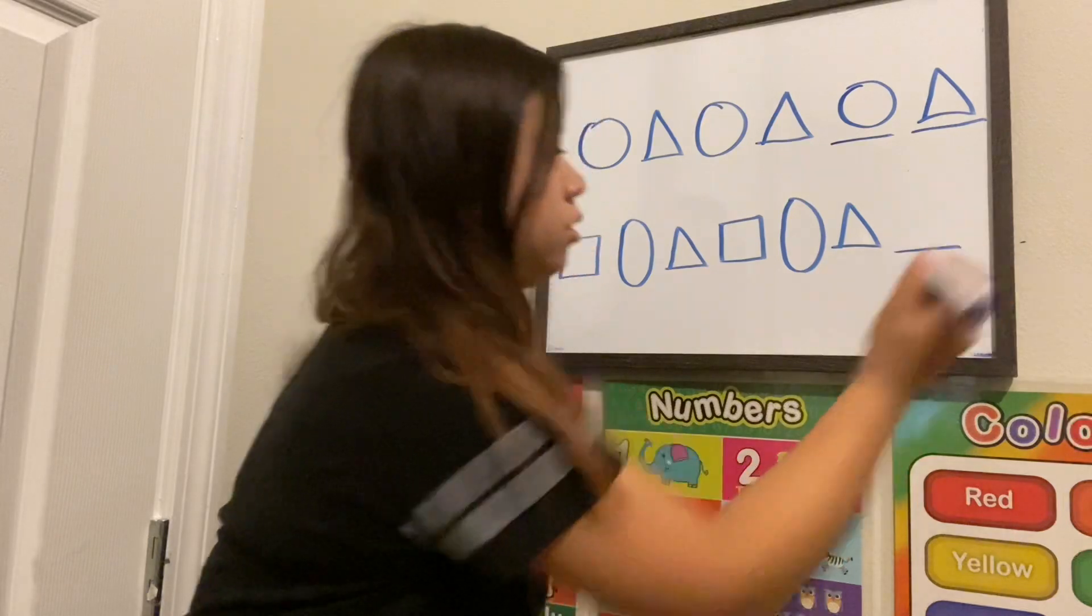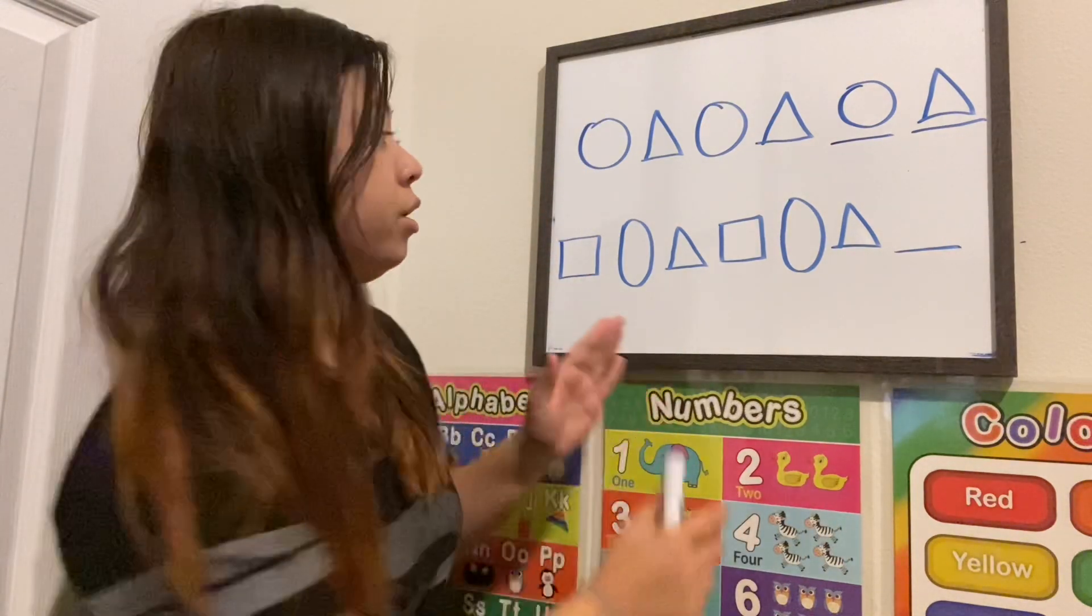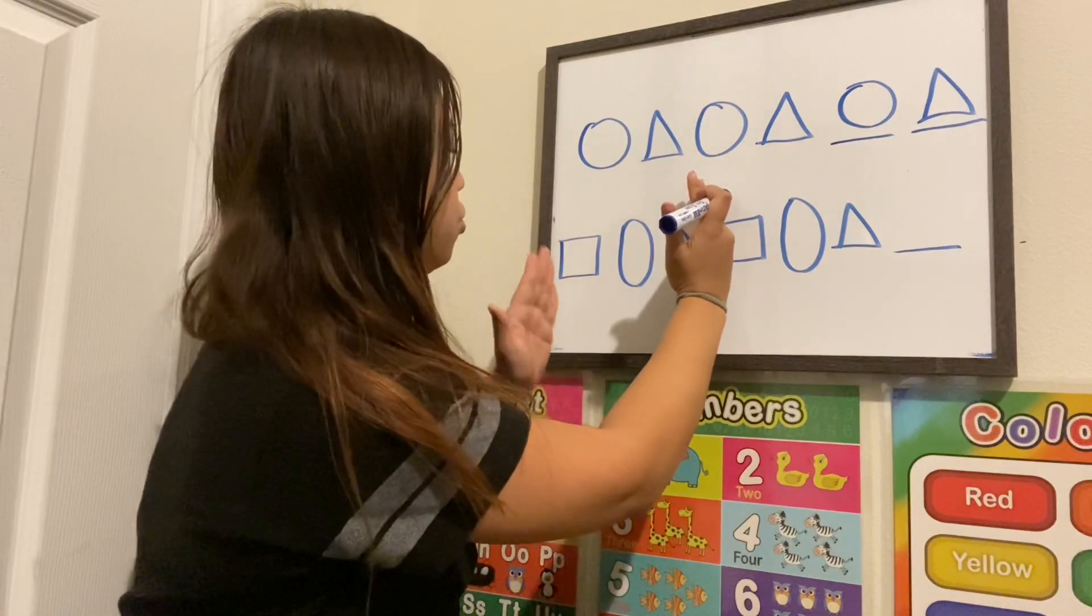What do you think comes next? So this is your pattern. I'm going to show you these three: square, oval, triangle.